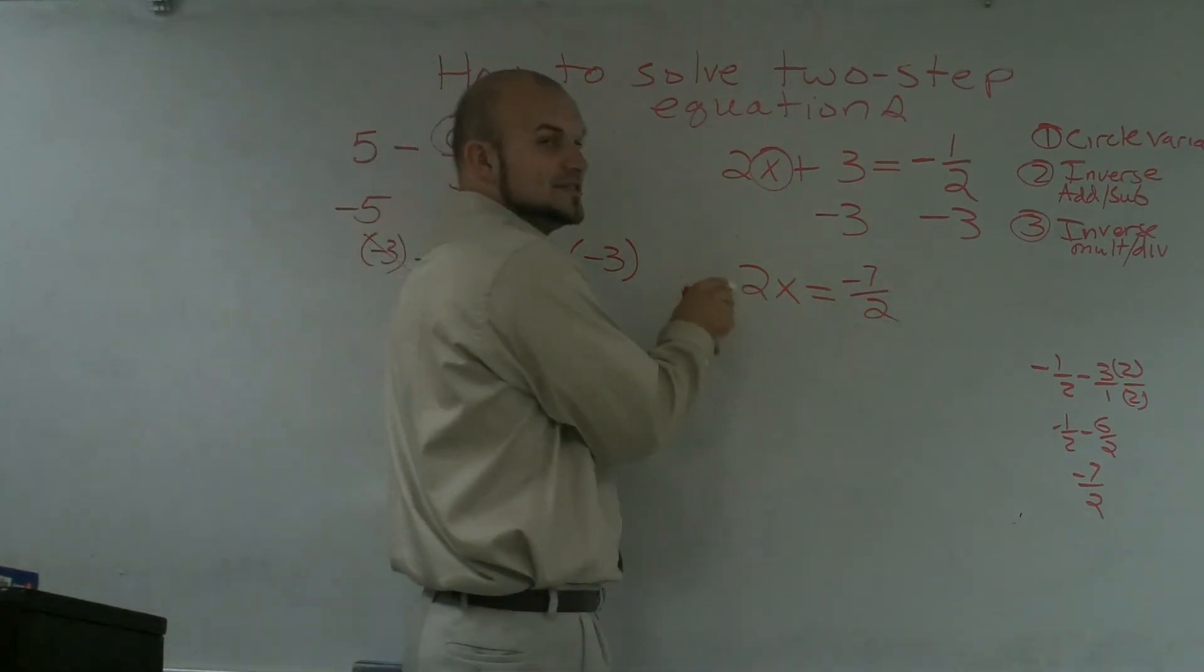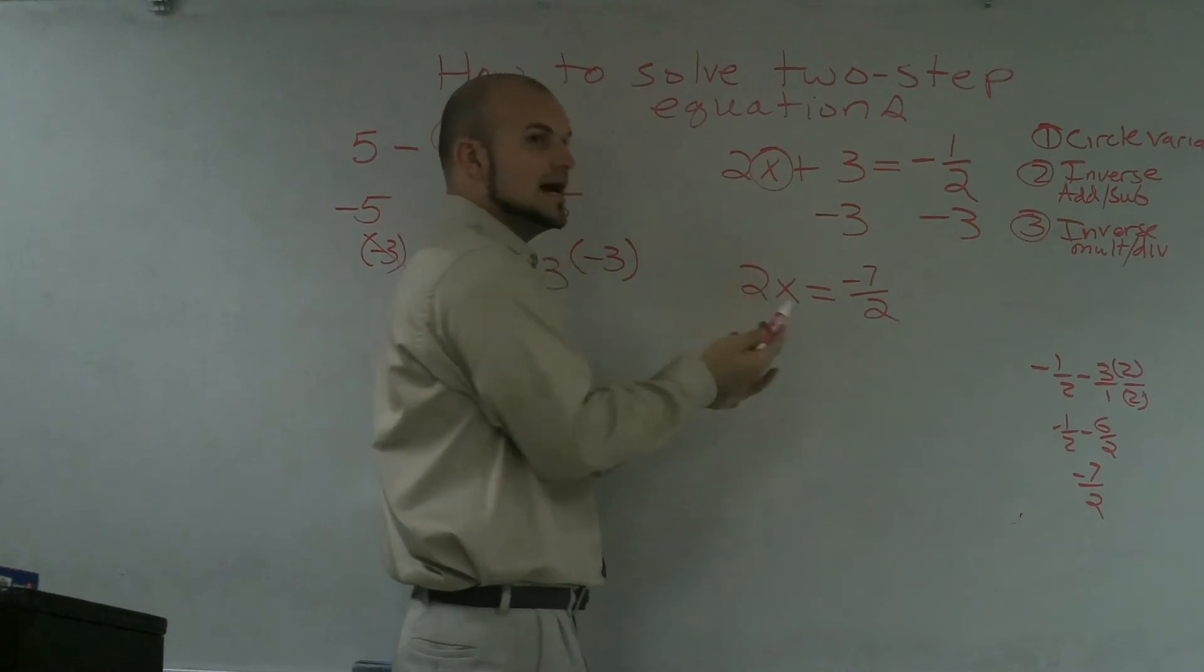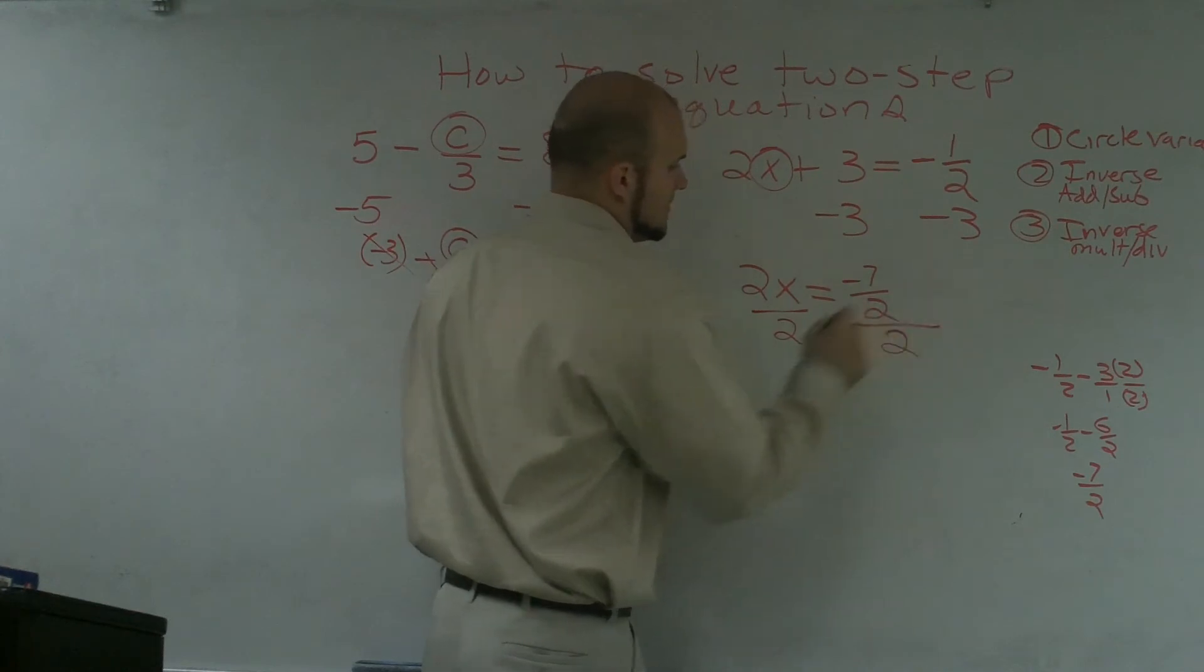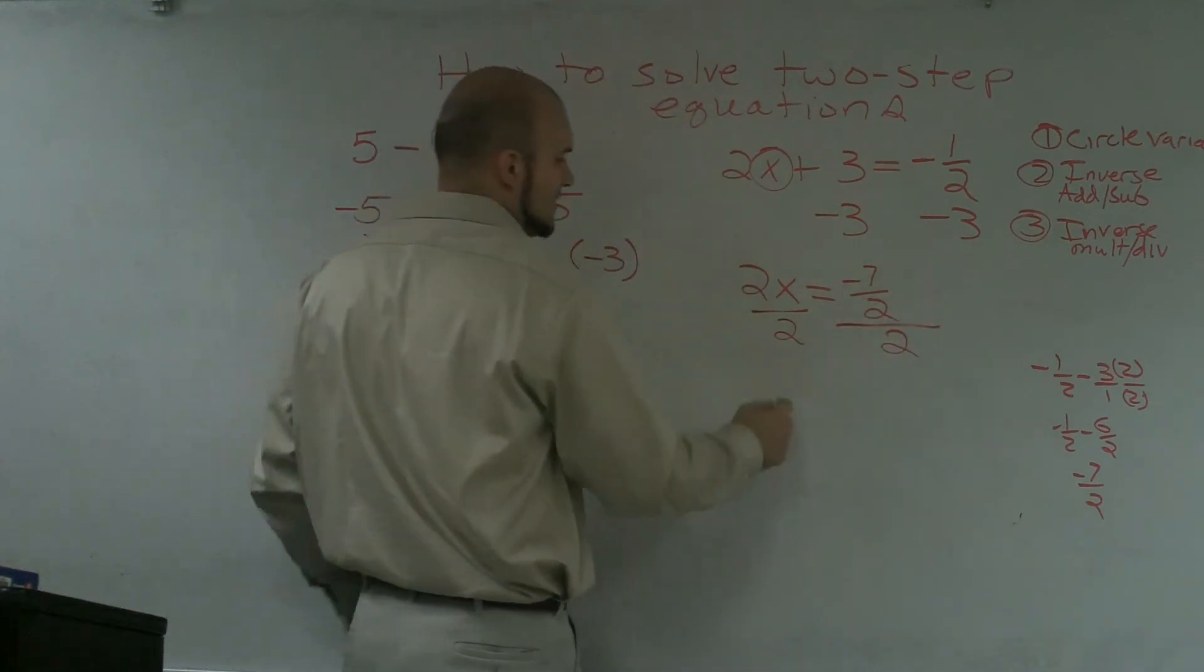Over here, I see that my 2, my variable is multiplied by 2. So now I'm going to want to go ahead and divide by 2. Those cancel out. I get x.